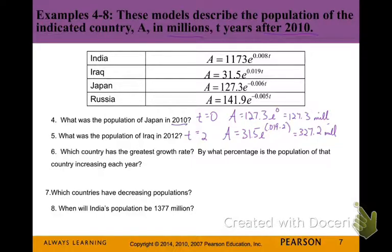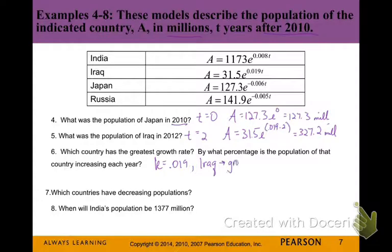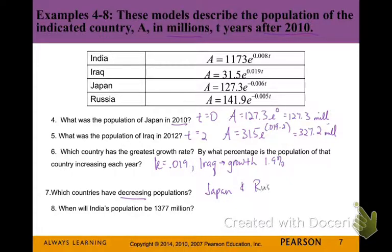Which country has the greatest growth rate, and by what percentage is the population increasing? We look at the k values. The greatest positive k value is for Iraq: 0.019. Moving that decimal two places to the right gives us about 1.9% growth rate. Countries with decreasing populations are Japan and Russia, because of their negative k values.